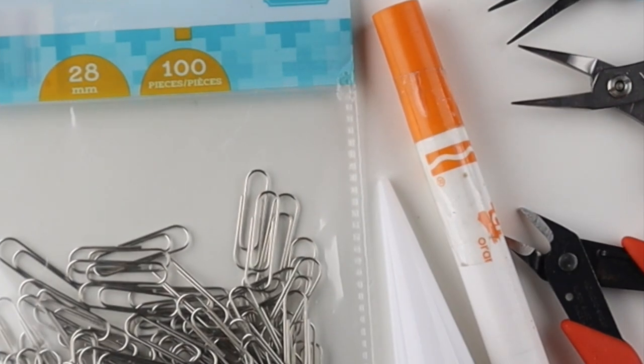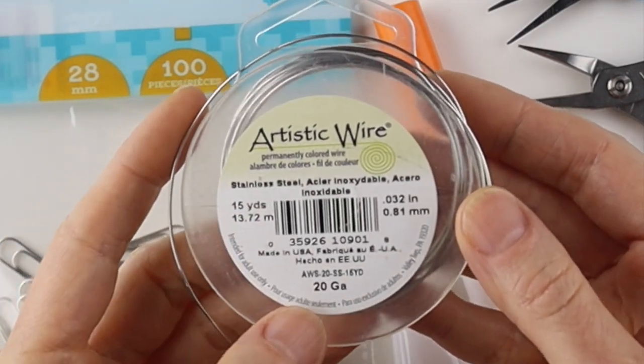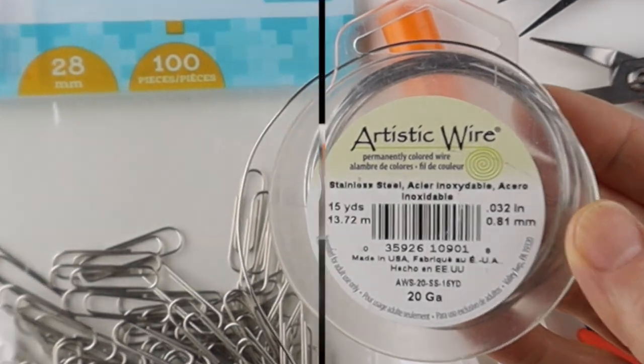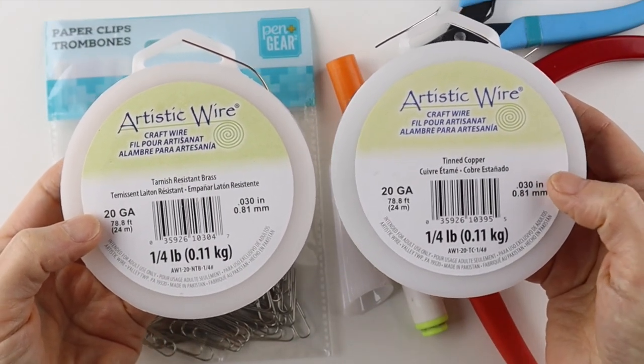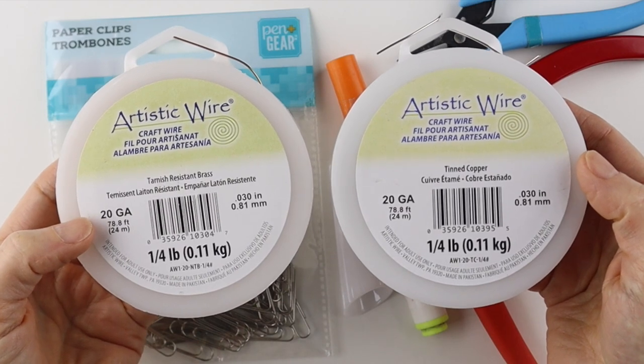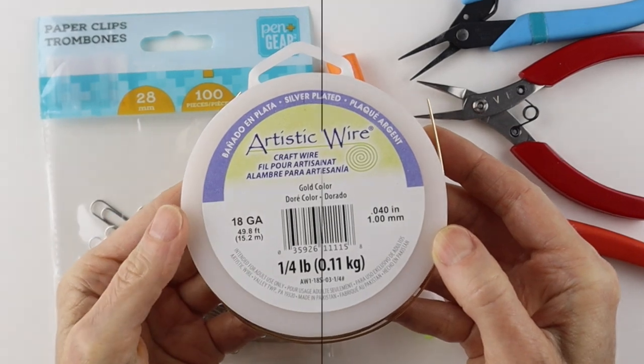If you don't have paperclips, the best thing to use is stainless steel wire. This is 20 gauge. It's quite stiff, just like the paperclips. You can use 20 gauge tarnish resistant brass, tinned copper, or any half hard wire. And if you only have a softer wire, use a little thicker, like 18 gauge.